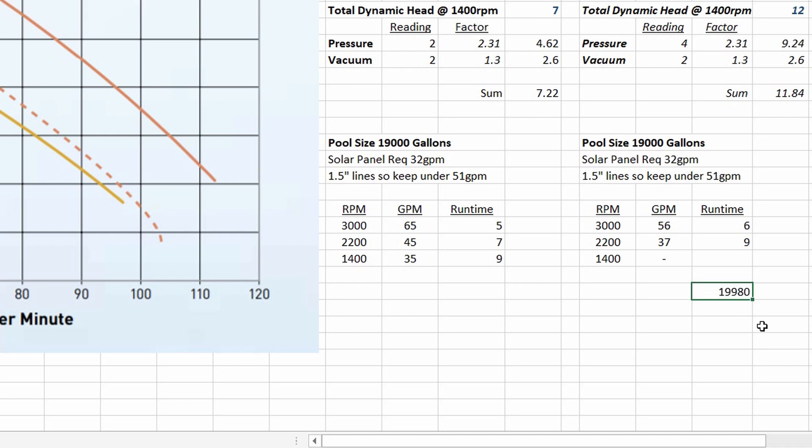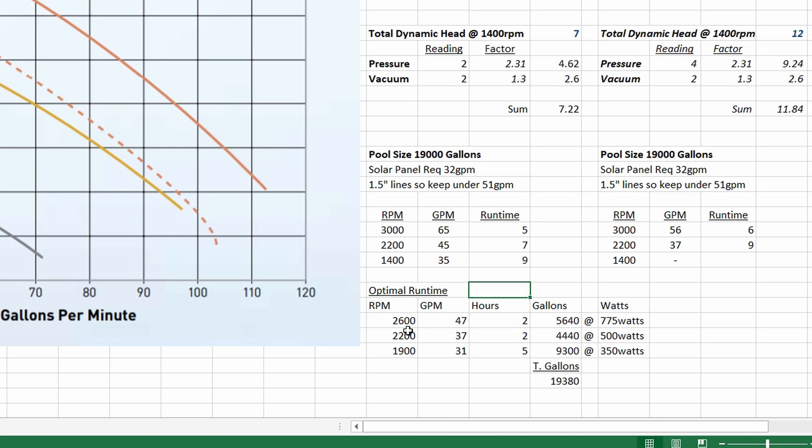Alright so in this table below I worked out a balance to run higher speed for some of the day to let my suction side pool cleaner climb the walls but remain in an efficient lower speed setting for the rest of the day which lets me keep my water circulating longer while using less electricity overall. So as you can see here at 1900 RPMs we're only using 350 watts while the pump will use 775 watts to run at 2600 RPM.